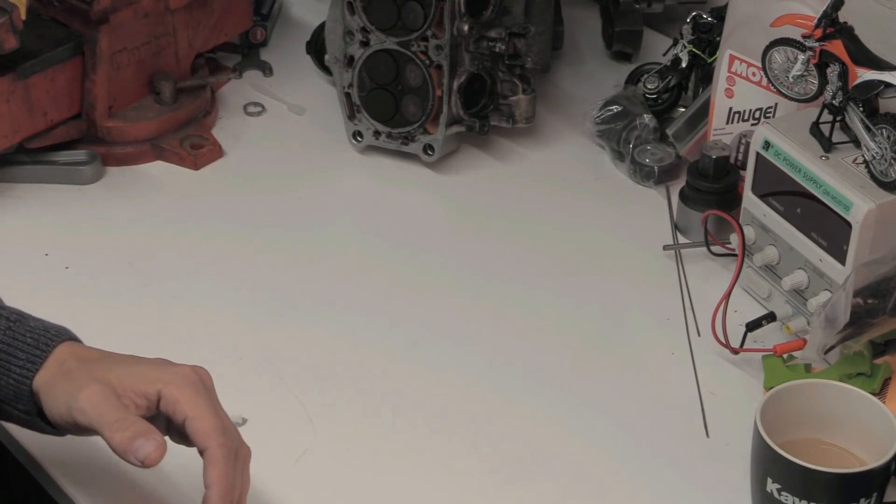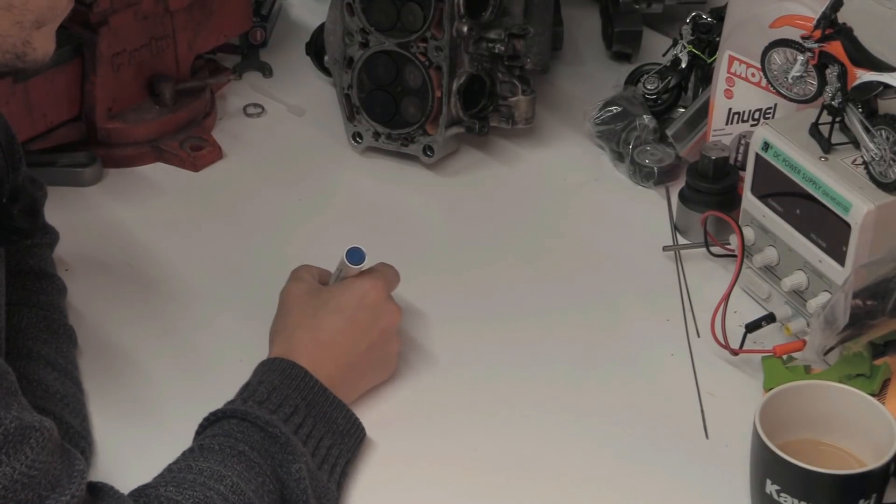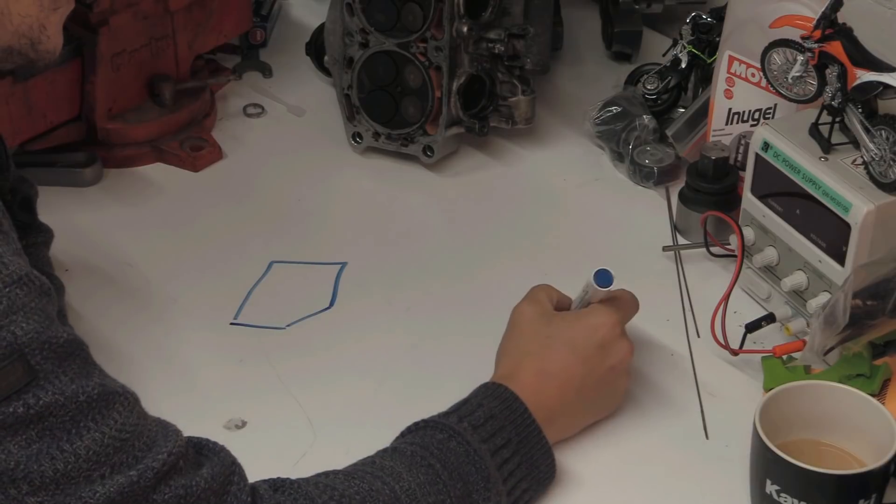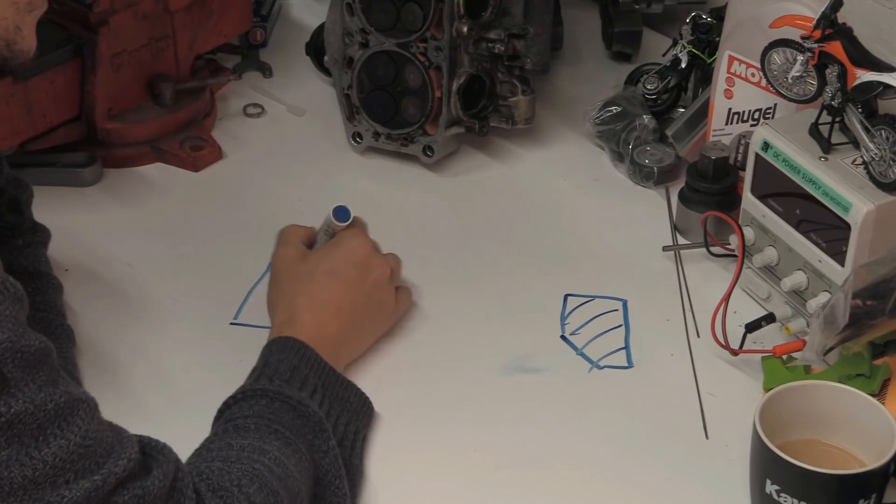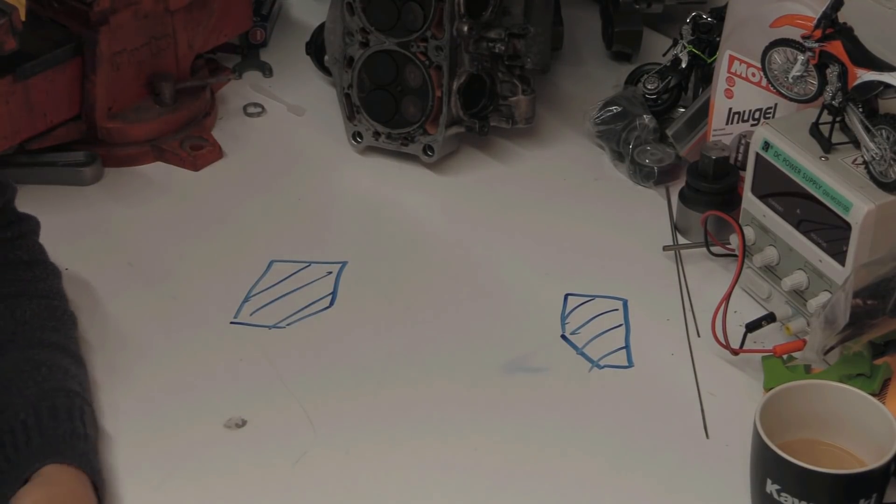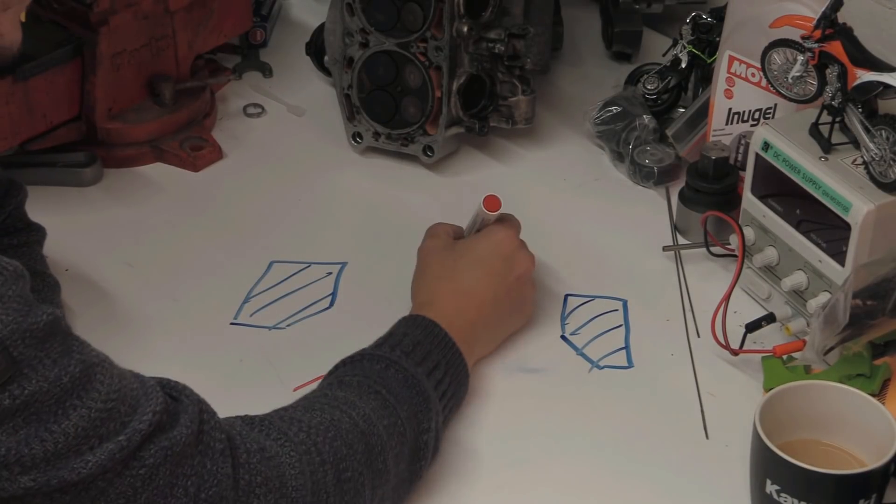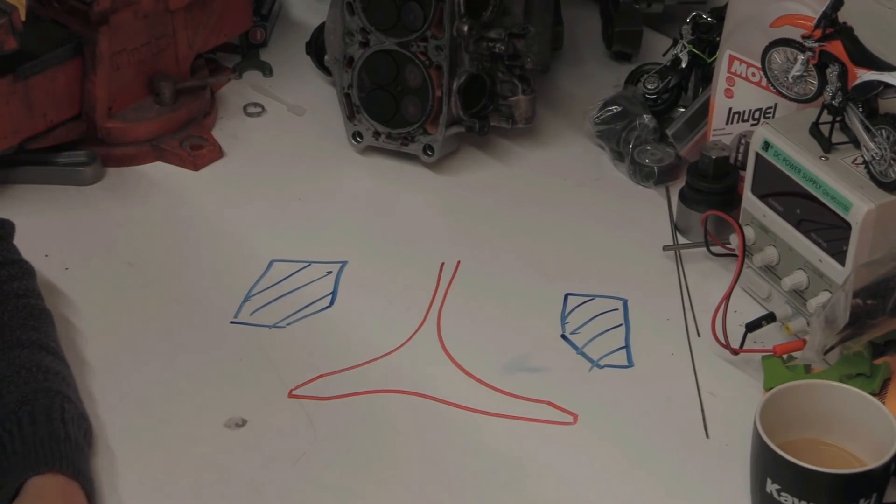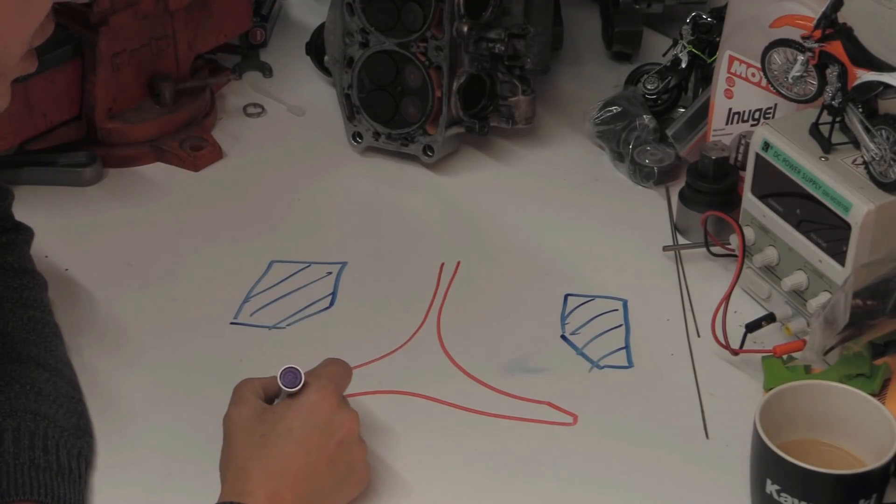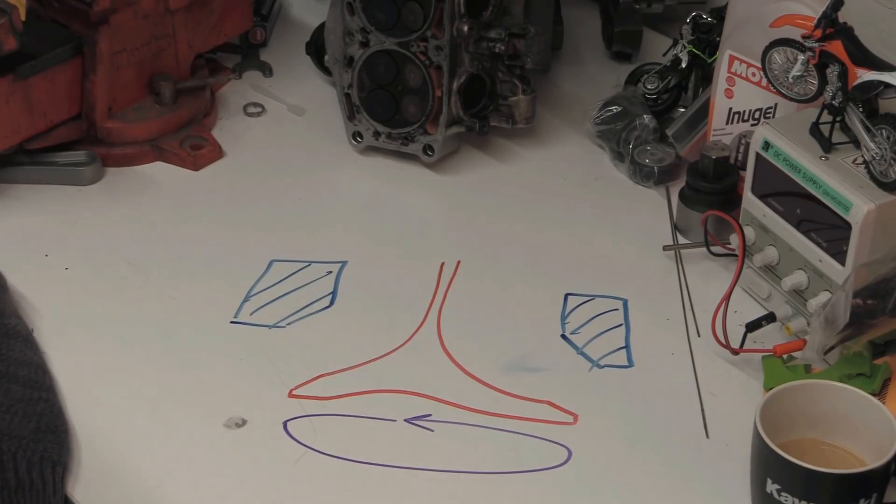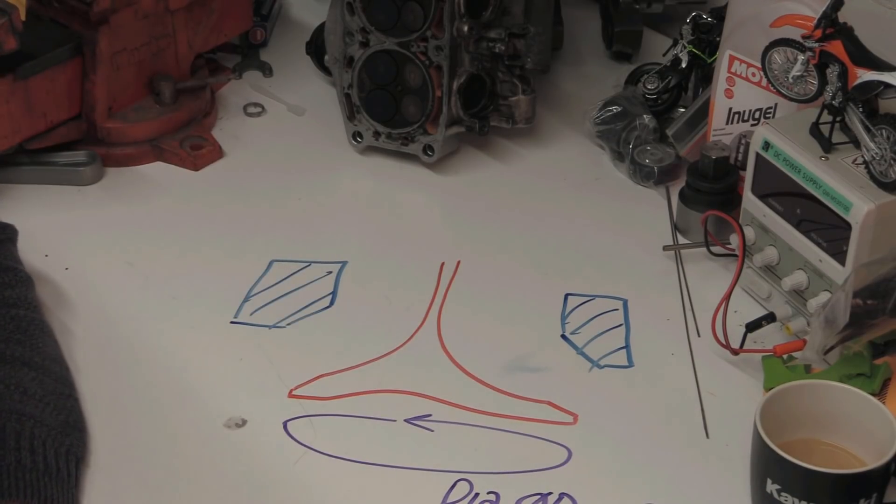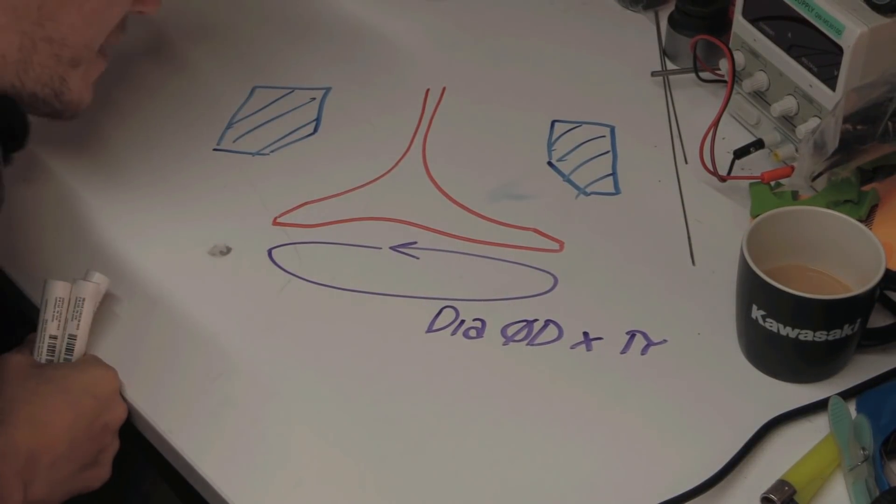Everybody knows that if you have some valve seats like this, this is a cross-section, and you then have a valve that comes down like this with a dimple in it or something. Everyone knows what you do is you measure the circumference, so you measure the circumference around the valve which is the diameter, D times pi. That's what your diameter is.